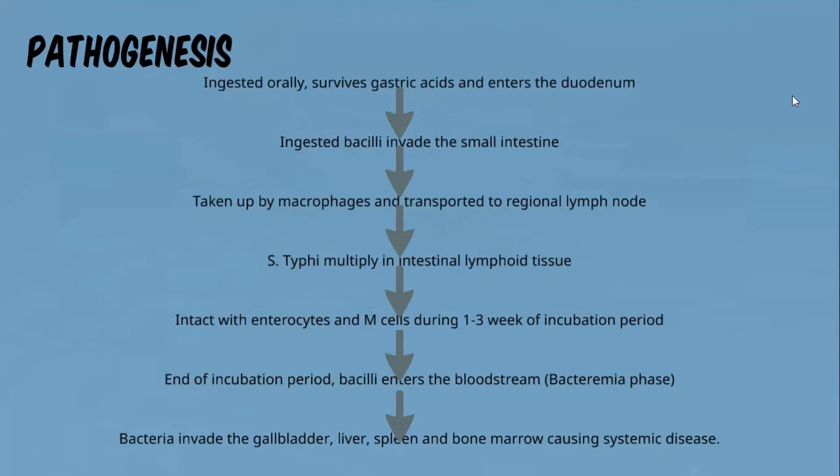The bacteria penetrate and multiply within the intestinal lymphoid tissue. This invasion of the epithelial cells triggers an inflammatory response, causing tissue damage and diarrhea. The bacteria can also spread to the liver, spleen, and bone marrow, causing systemic disease.